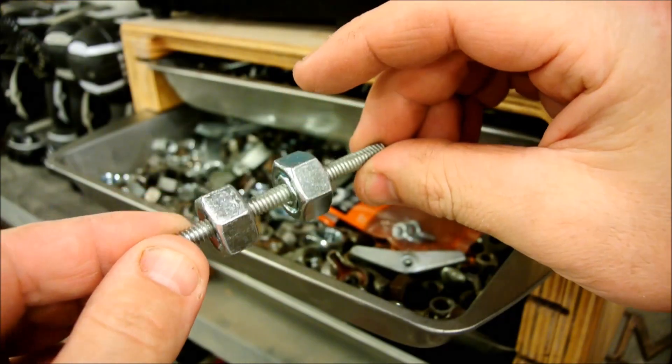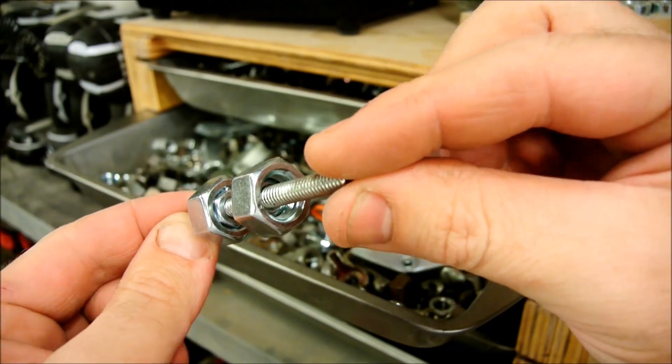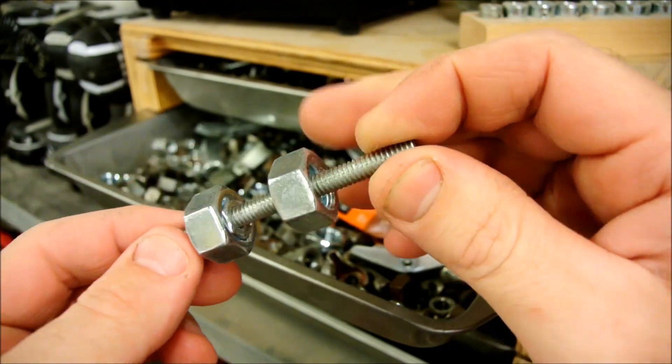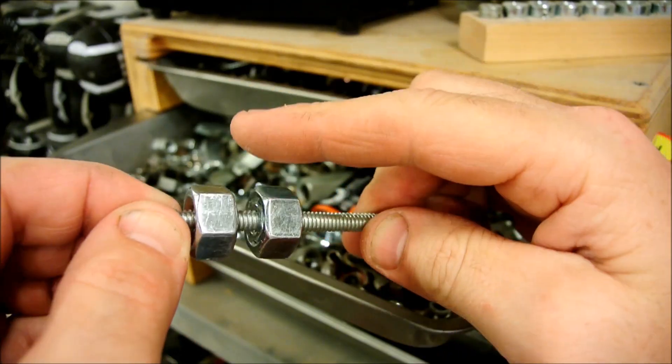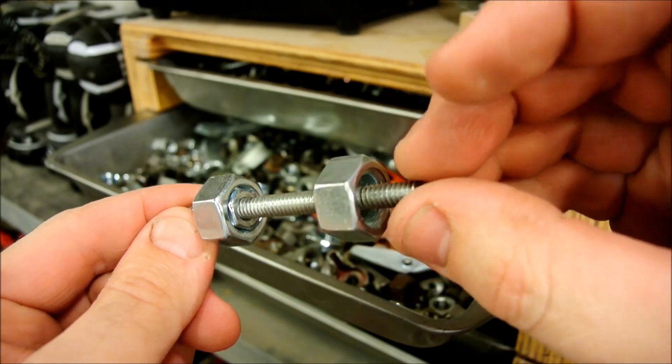By the way, I make these nut knobs by pressing a quarter-twenty nut down into a larger nut using the vise, and they make a wonderful alternative to a wing nut. Once you start using these, you'll want to put them everywhere.